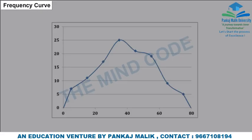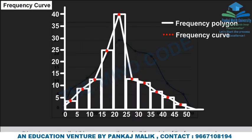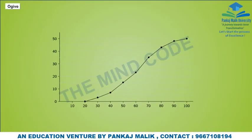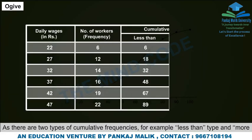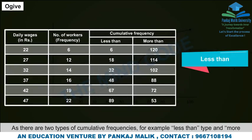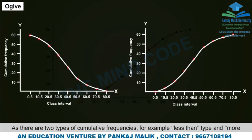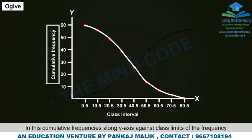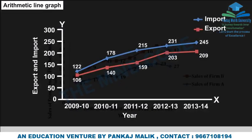Frequency Curve and Ogive: A frequency curve is drawn with a smooth freehand curve passing through the points of the frequency polygon as closely as possible. It is not necessary that the curve pass through all the points. The ogive is also known as the cumulative frequency curve. Since there are two types of cumulative frequencies — less than type and more than type — there are two ogives for any grouped frequency distribution. Cumulative frequencies are plotted along the y-axis against class limits.